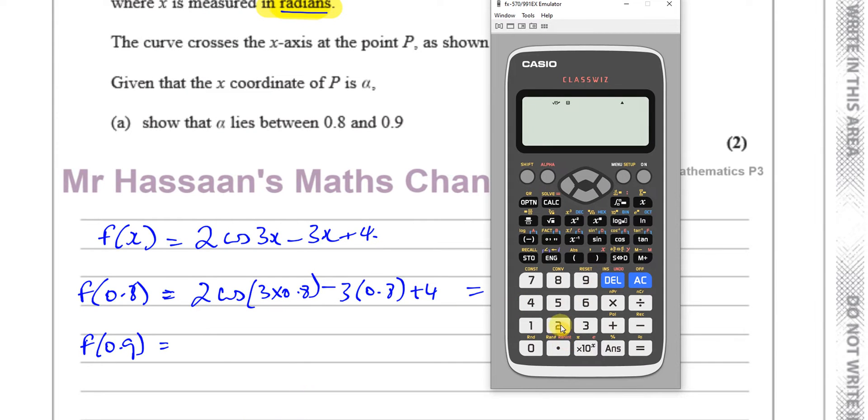Okay. So if I show that step, then they know exactly what I'm doing. So 2 times the cosine of 3 times 0.8 close bracket minus 3 times 0.8. What's going on here? Minus 3 times 0.8. I'll put in the bracket there. My point is not becoming a point.